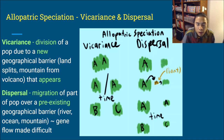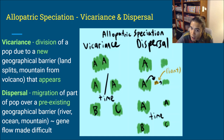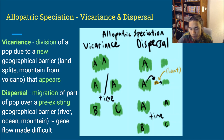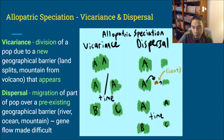Looking at the vicariance model: on this island we have species A, some on one side and some on the other. The land splits in half and a new geographical barrier is made — all that ocean between them. Over a lot of time, each subpopulation builds up mutations such that if you were to put them together they would not interbreed. They are considered a new species by the biological species concept.